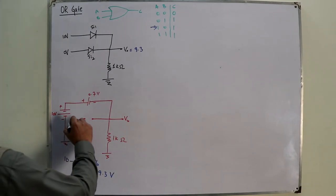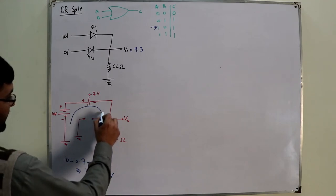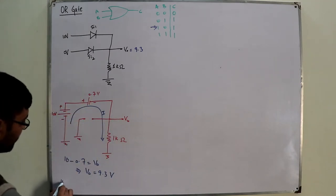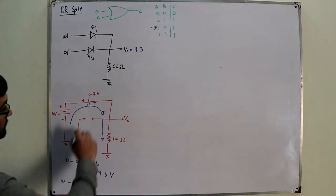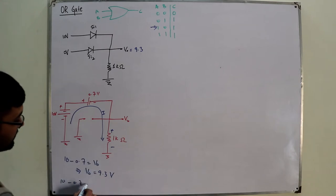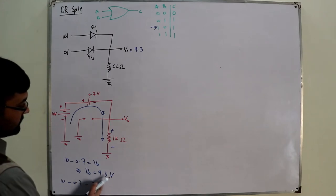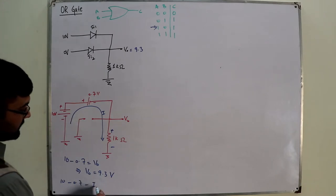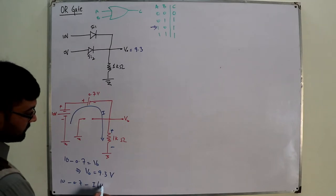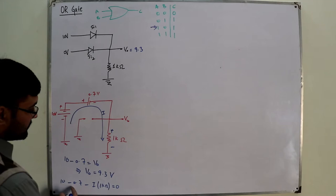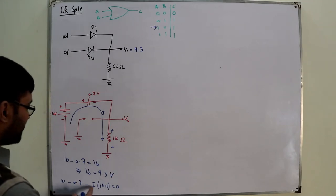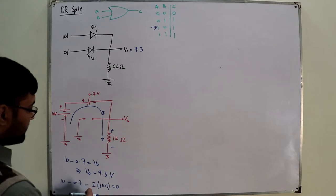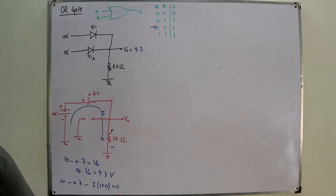You can also find the current in the circuit. Applying KVL: 10 volts minus 0.7 volts minus I times 1 kilo-ohm equals zero. So I equals 9.3 divided by 1 kilo-ohm, which gives 9.3 milli-amperes. The book confirms this value as well — the current in the circuit is 9.3 milli-amperes.